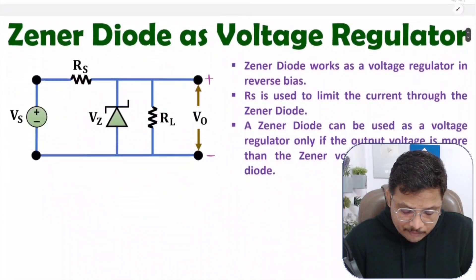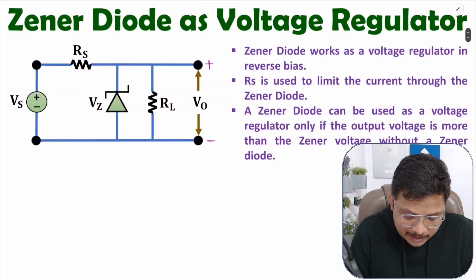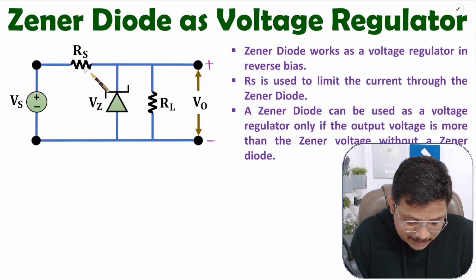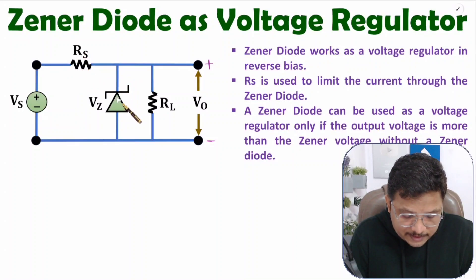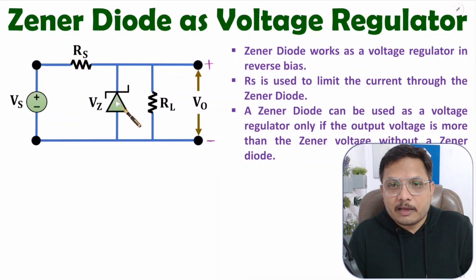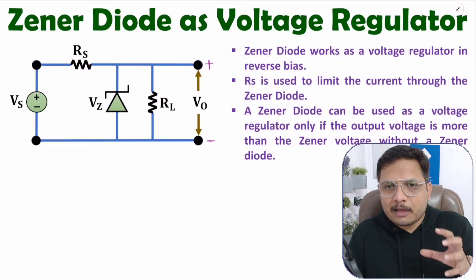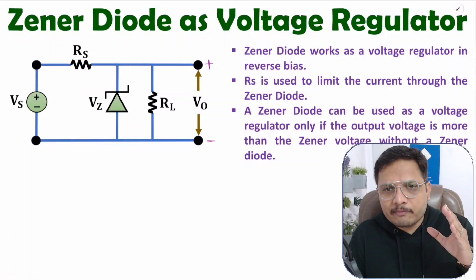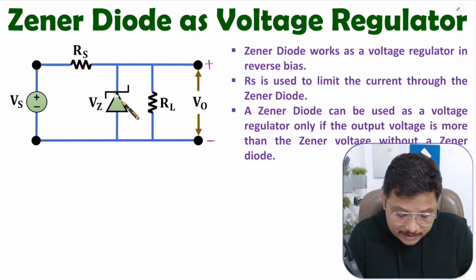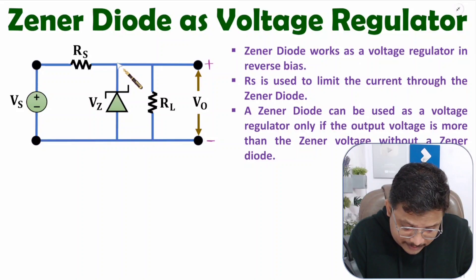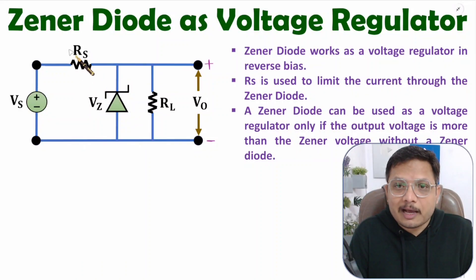If you talk about some other parameters, we are connecting RS in series with Vs. This RS is used to limit the current passing through Vz. If you don't use RS, then high current will flow through Vz. To limit the current passing through the Zener diode, we are connecting RS resistance here.